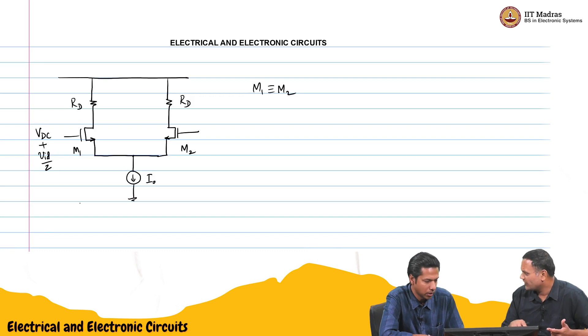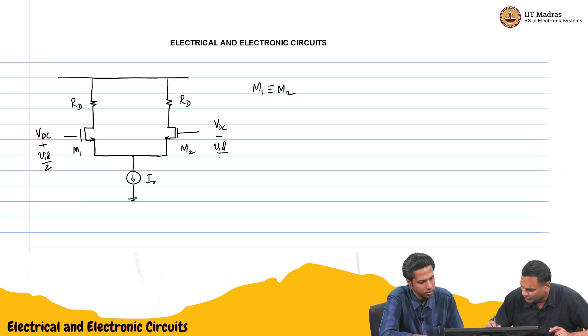Right. I said input no. So, VID is what I said. And we will say VDC minus VID by 2. So, that for this overall amplifier, you take the difference between the two inputs, this input and this input, it will be VID.